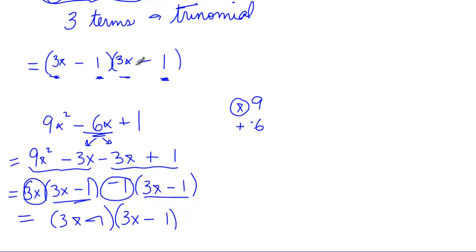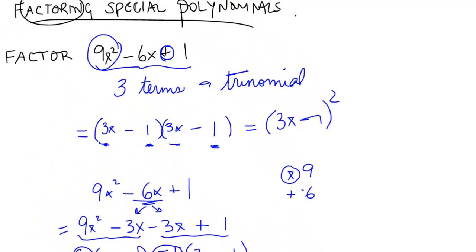Notice something here. We've factored this two different ways. But look at our answer both times, and obviously we should get the same thing. If we have something times itself in math, we don't have to write it like that. We can go ahead and say, that thing is squared.